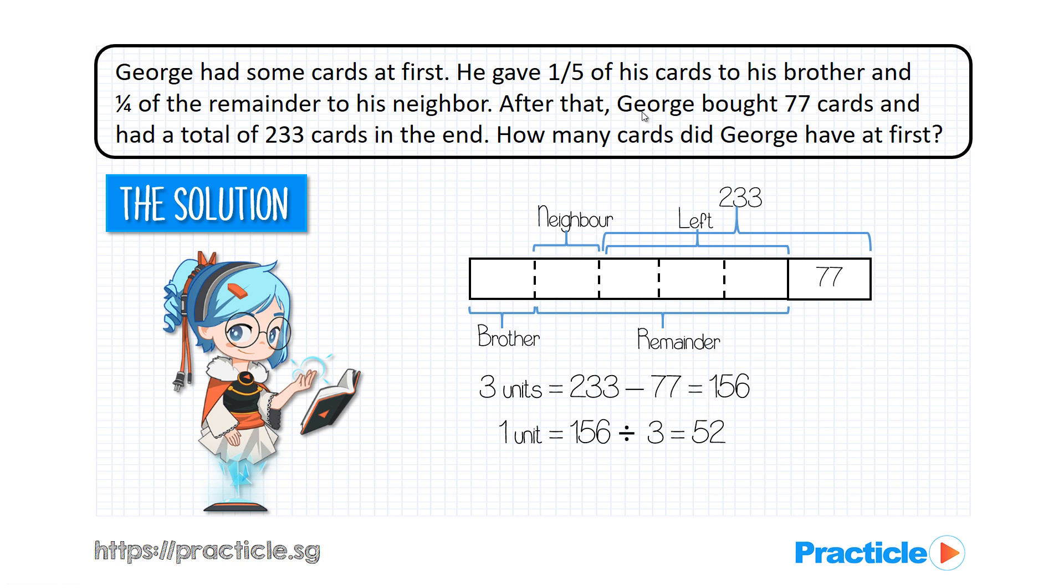Now, do you remember what we are supposed to find? We are supposed to find the number of cards that George had at first. Initially, before George bought these extra cards over here, he had 5 units. Correct? Since we know that 1 unit equals to 52, to find the value of 5 units, all we need to do is to multiply 52 by 5, and this gives us a final answer of 260.